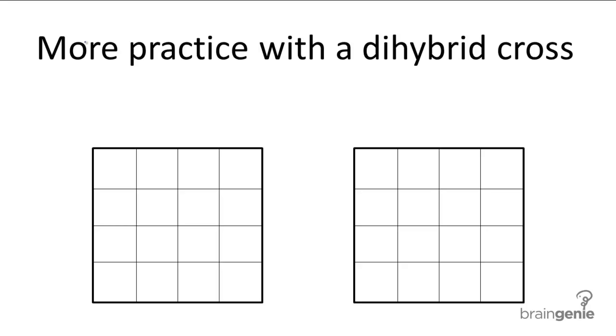So we're gonna walk through a couple examples of different types of dihybrid crosses so you can master the dihybrid Punnett square. Our first example: in summer squash, white fruit is dominant over yellow fruit and disc shaped fruit is dominant over sphere shaped fruit.